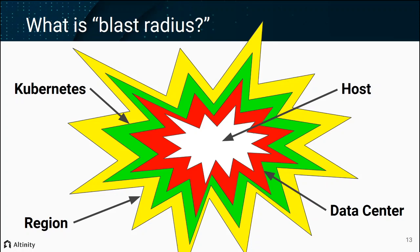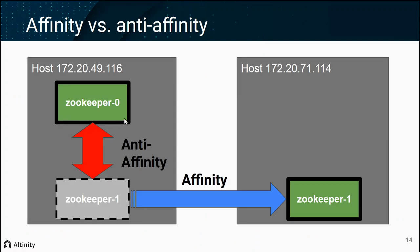Beyond that, you can think of a failure at the level of a Kubernetes cluster, making things within that cluster unavailable or unusable, and then of course a failure within an entire region. There have been historically failures in things like Amazon that caused entire regions to lose access to critical services and even data across a number of data centers. The really key thing to avoid blast radius problems is to get distance between your replicas, and for that there's an incredibly helpful concept in Kubernetes called affinity, which gives us the ability to move pods and associated resources into different locations.